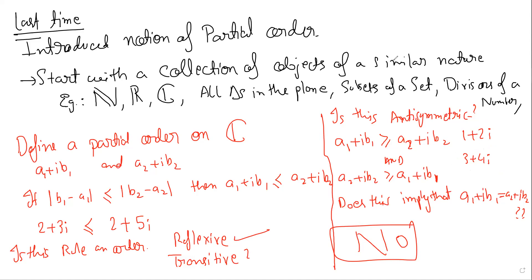Even to this particular relation, which is right now not an order, we can modify the complex numbers so that this becomes an order. We can put new notions of equality among complex numbers — equivalence relations — so that this becomes an order. Right now it is what is called a pre-order.